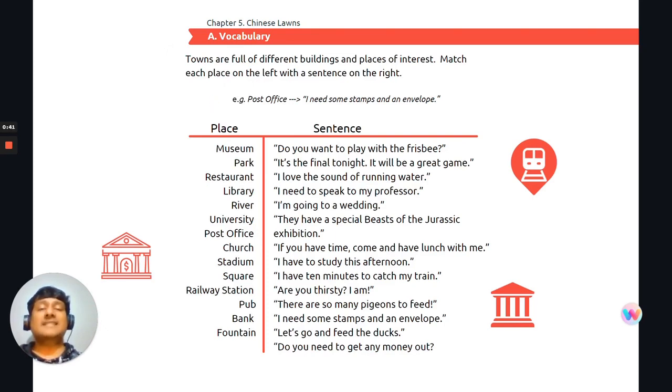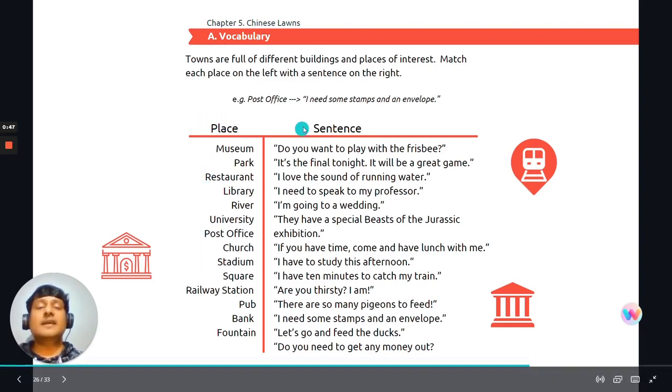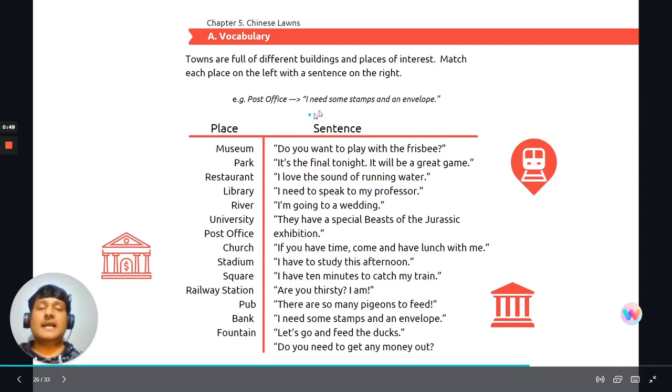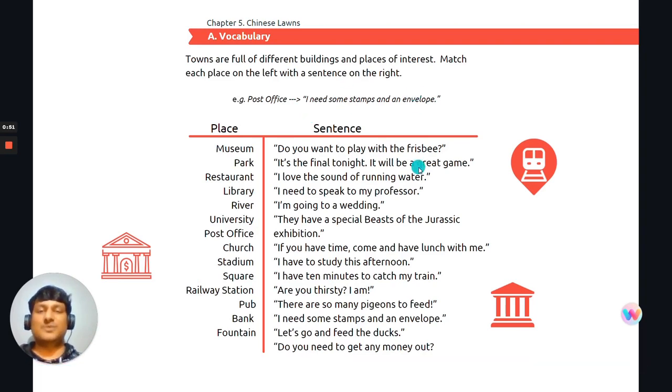They've provided us with an example which is post office. I need some stamps and an envelope. So firstly we're given place and there's a list of places underneath it and then we're given a sentence and there's a long list of sentences as well. So as I said before we are going to match everything in column A under place with everything in column B. Okay, so firstly I'm going to read through the list of places and sentences and then I want you to pause the video, read through it on your own and then you're going to move on to matching.